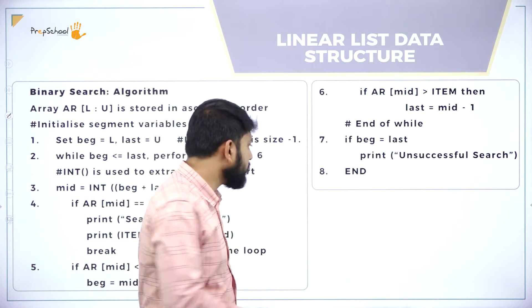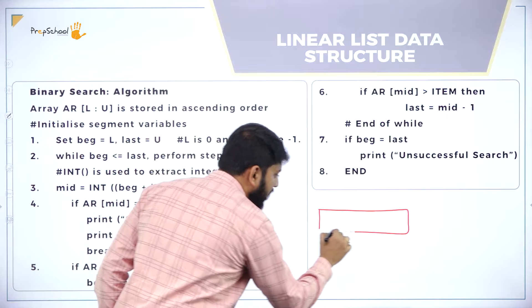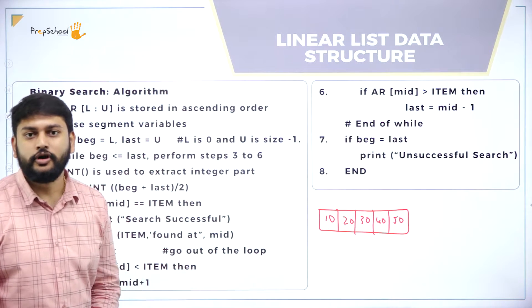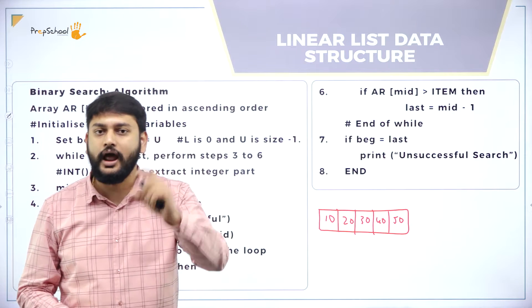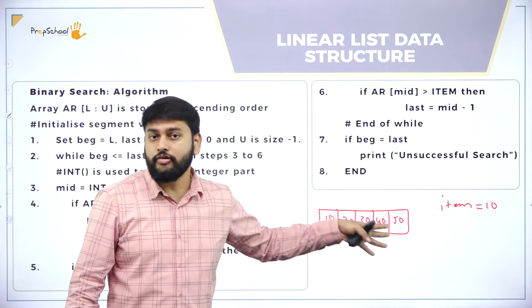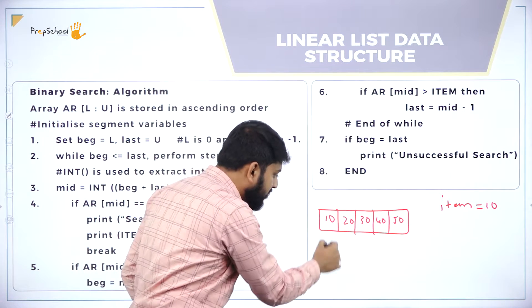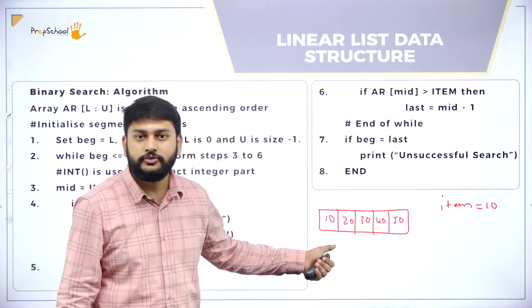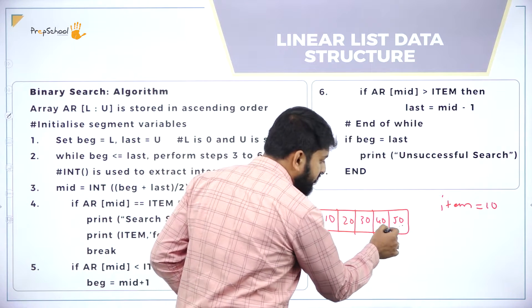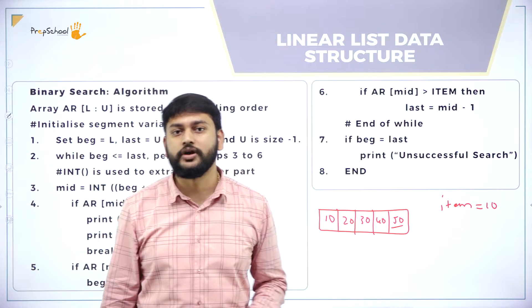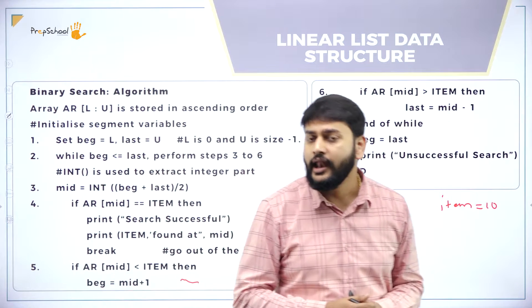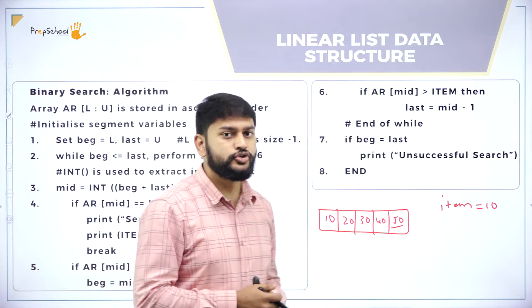I have a linear array. Imagine this is my linear array — I have stored 10, 20, 30, 40, 50. In this array I want to search for a particular item, let's say item equals 10. I will compare this item with each and every value. If the item is at the beginning, my search will end very soon, but if the search element is at the end, I have to go through all values in the list. This is quite challenging — so how do I improve my searching technique?